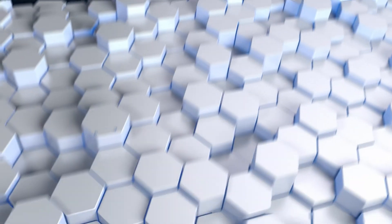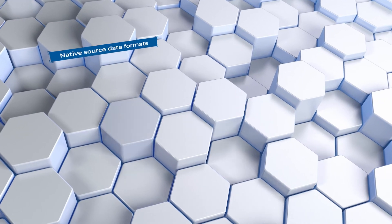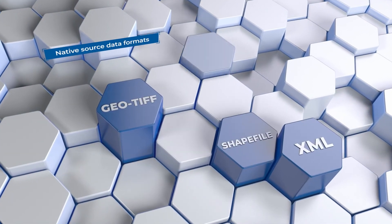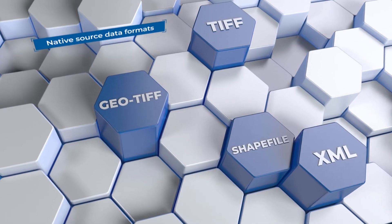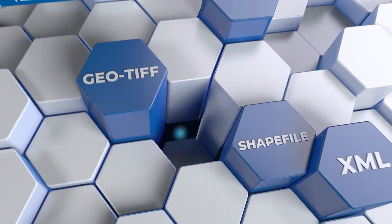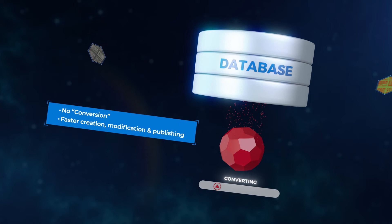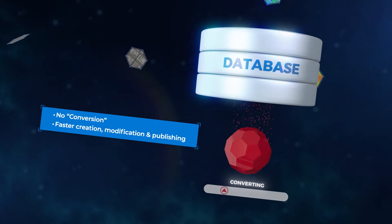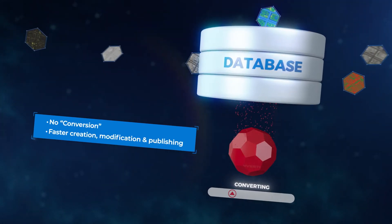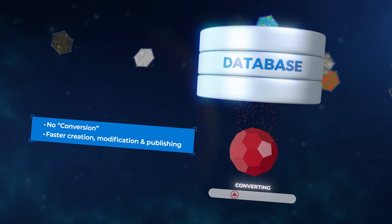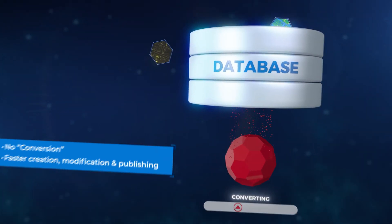Natively, CDB is comprised of pure source data formats such as GeoTIFF, XML, Shapefile and TIFF. This native format approach avoids the conversion of data, which greatly accelerates database creation and publishing. It also allows for rapid modifications of synthetic environments.